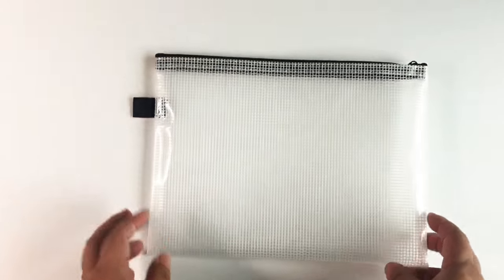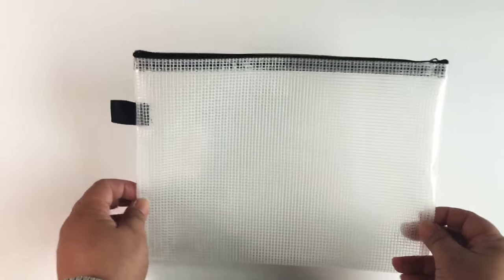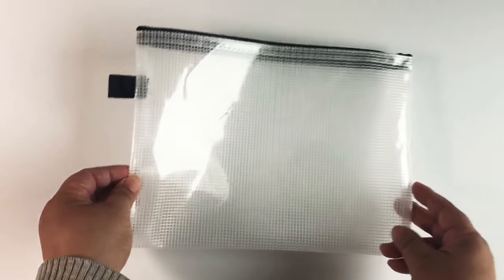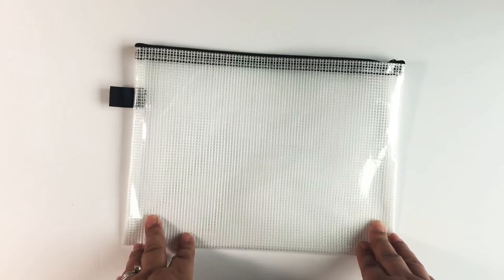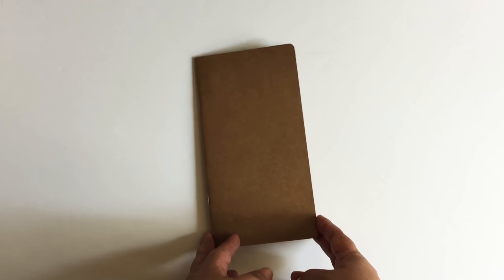For shorter trips, like a weekend away, I will just put my supplies in this plastic document holder. This one I purchased from Daiso, but if you can't find it there, you can find it at Staples or Office Depot or even Amazon. To save space, I will bring one or maybe even two inserts instead of the entire traveler's notebook or journal.